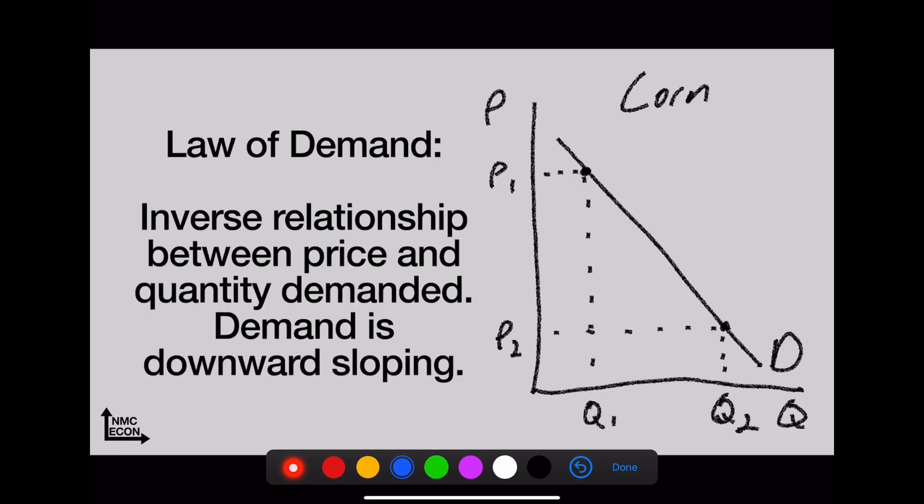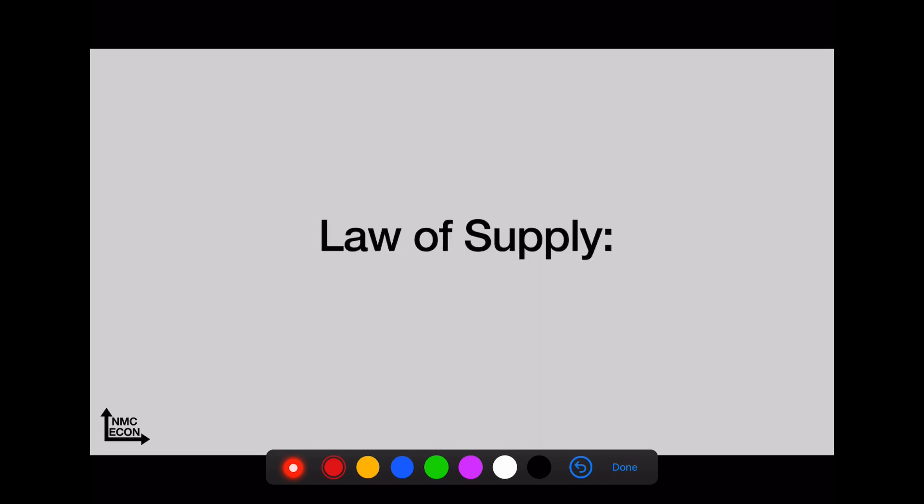The law of demand states that there's an inverse relationship between price and quantity demanded. Demand therefore is downward sloping. Take a look: at P1 we have a quantity demanded of Q1—that's not very much, it's a high price, that makes sense. What about a low price like P2? Lots of quantity demanded. When we change that price, by the way, we move along the curve. It's not more demand, it's more quantity demanded.